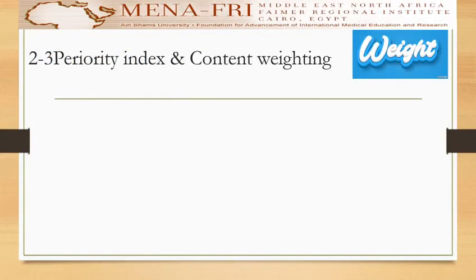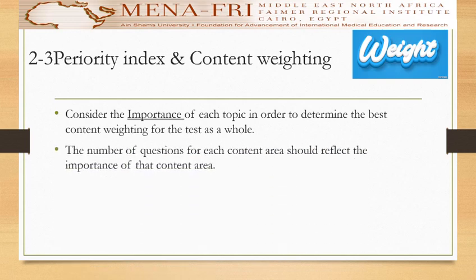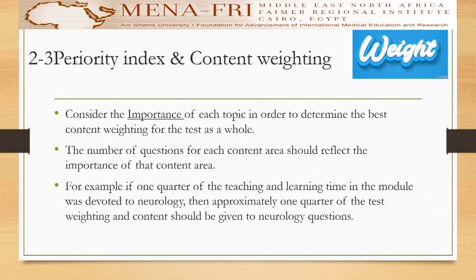For the second and third steps — the priority index and content weighting — both are interrelated to each other. Consider the importance of each topic in order to determine the best content weighting for the test as a whole. The number of questions for each content area should reflect the importance of that content area. For example, if one quarter of the teaching and learning time in the module was devoted to neurology, then approximately one quarter of the test weighting and content should be given to the neurology questions.